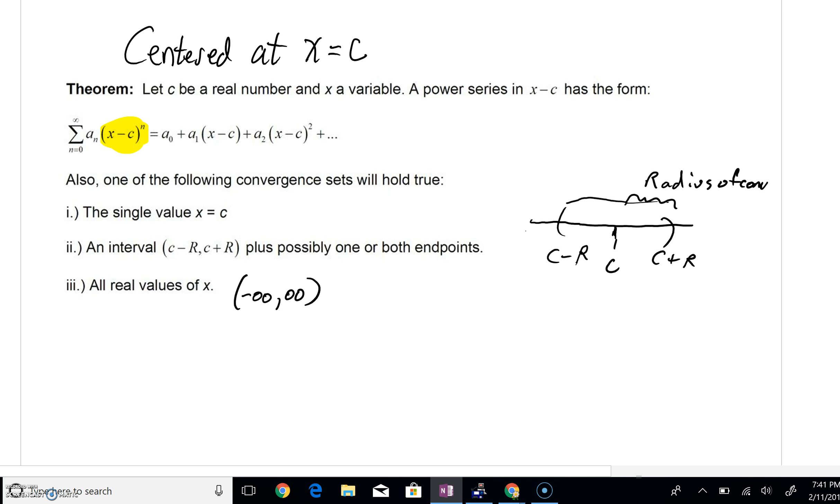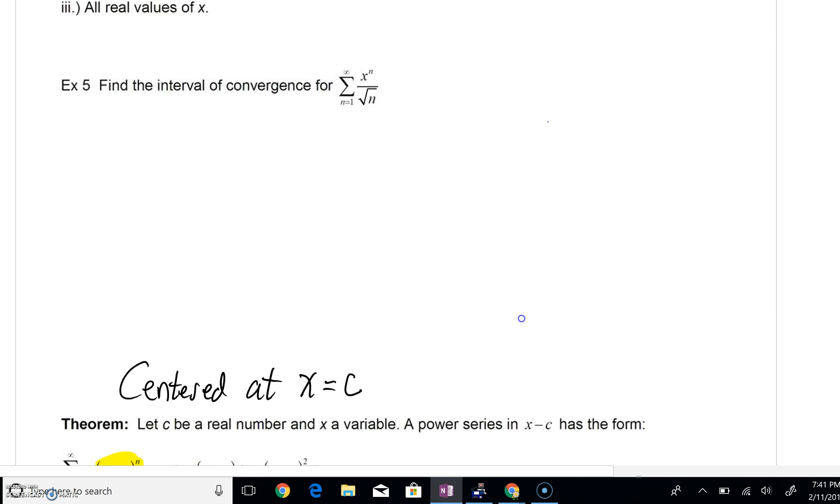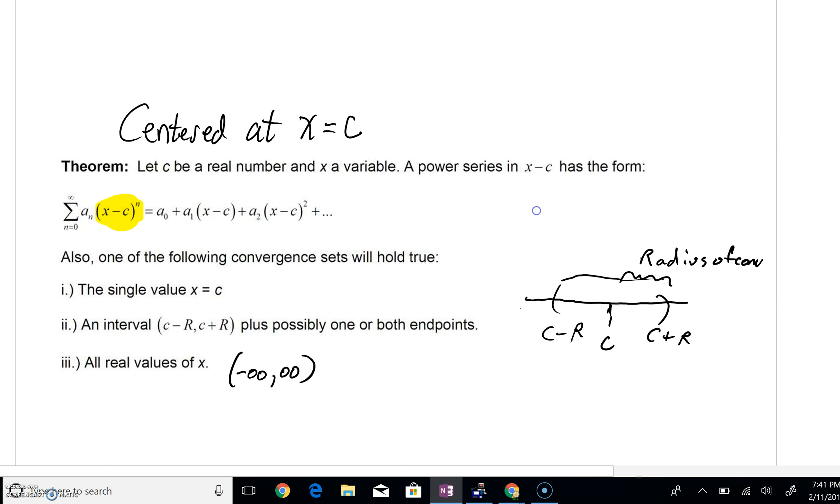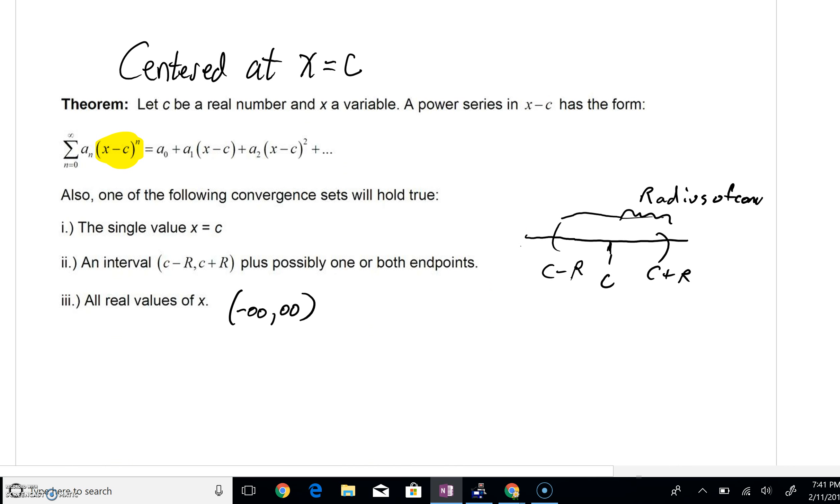Getting back to Lesson 12.8 in BC Calc, we were skipping Example 5, we're going to take a real quick look at something very similar to the theory that we just talked about. What if we were not centered at x equals zero? What if we were centered somewhere else at x equals c?